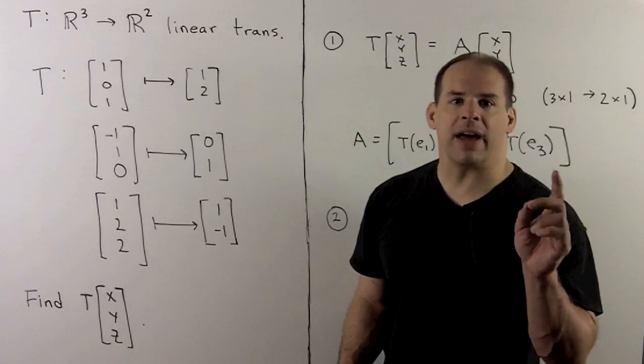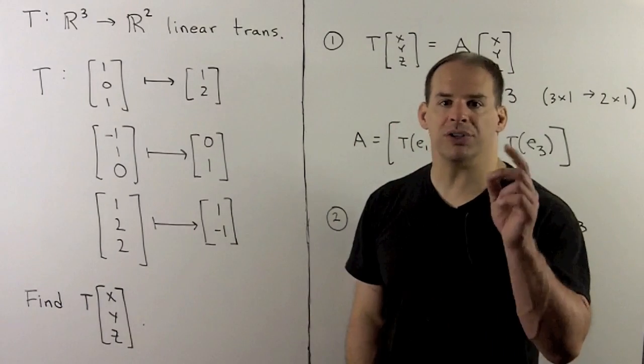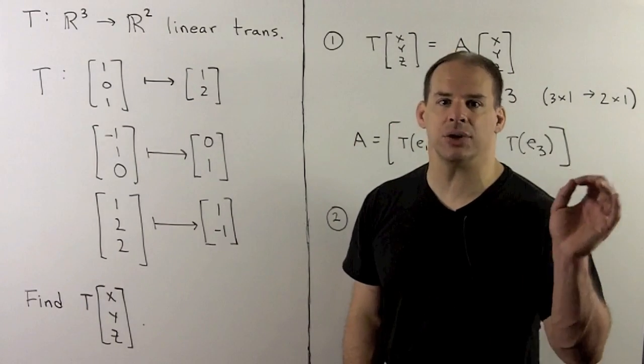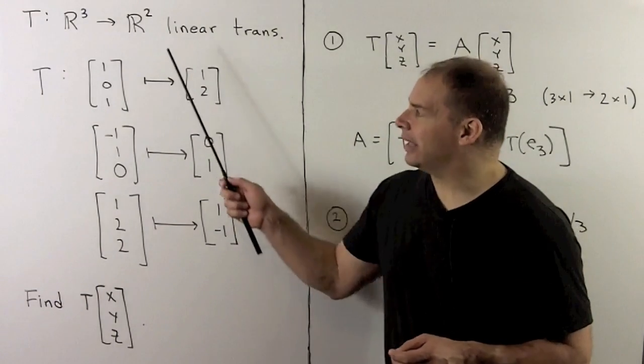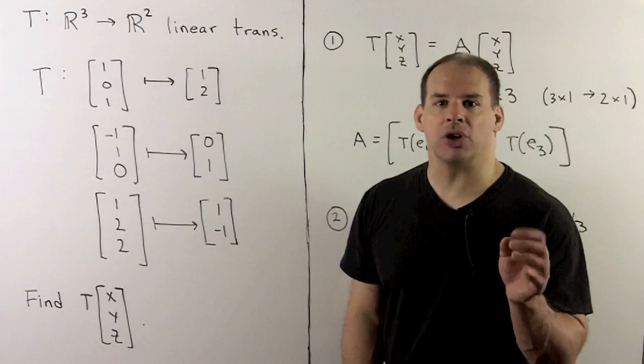Our goal here is to be able to evaluate T on the standard basis vectors for R3, so (1,0,0), (0,1,0), and (0,0,1). If we have those values, then we can use linearity to reconstruct all of T.